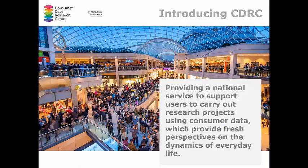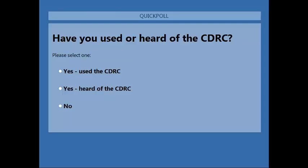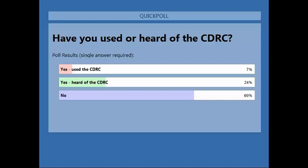The CDRC is a national centre funded by the ESRC as part of their phase two big data network. It's accessible for all academics to use. Its main aim in the first phase was to broker relationships with commercial data partners and host data and make them available for other academics to apply to use. A quick poll: the majority of you haven't even heard of the CDRC, which gives me a good sales pitch for the next few minutes. Only a few of you have actually used the CDRC.